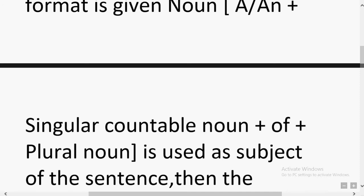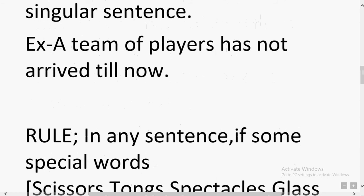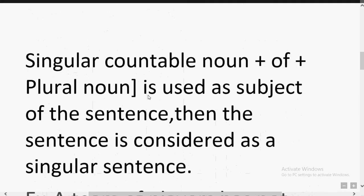When this format is used as the subject of the sentence, the sentence is considered singular. The key point I always emphasize: if this structure appears as the sentence's subject, the verb depends on it. For example: 'A team of players has not arrived till now.' Here 'a' is the article, 'team' is the singular countable noun, 'of' follows, and 'players' is the plural noun.